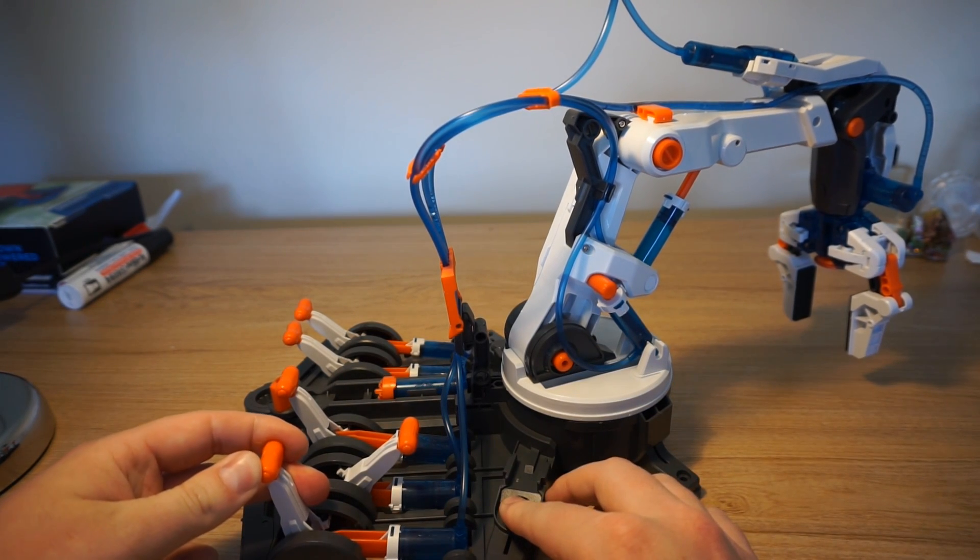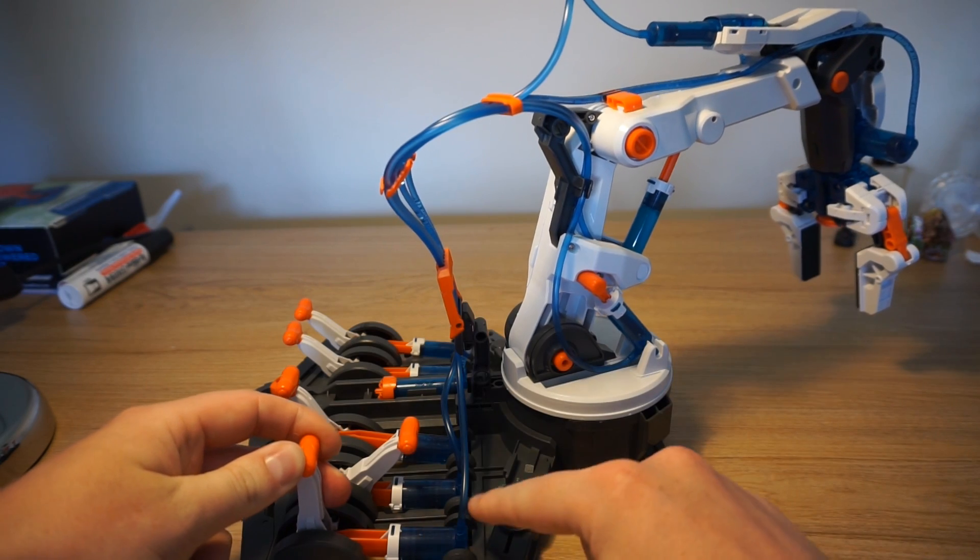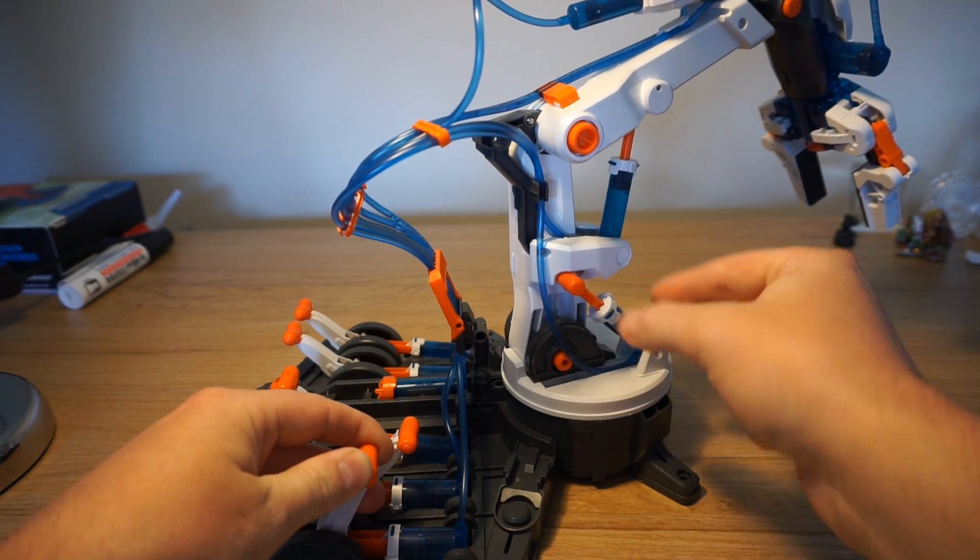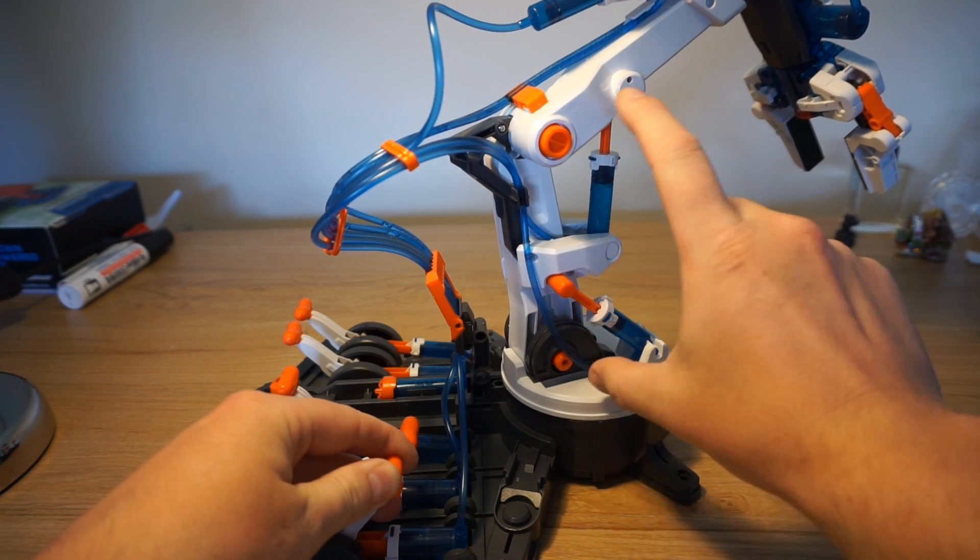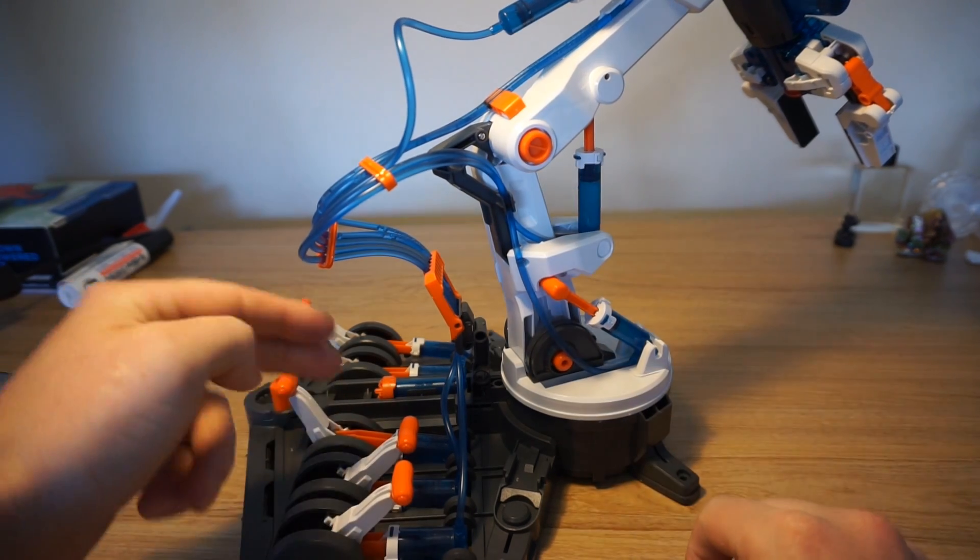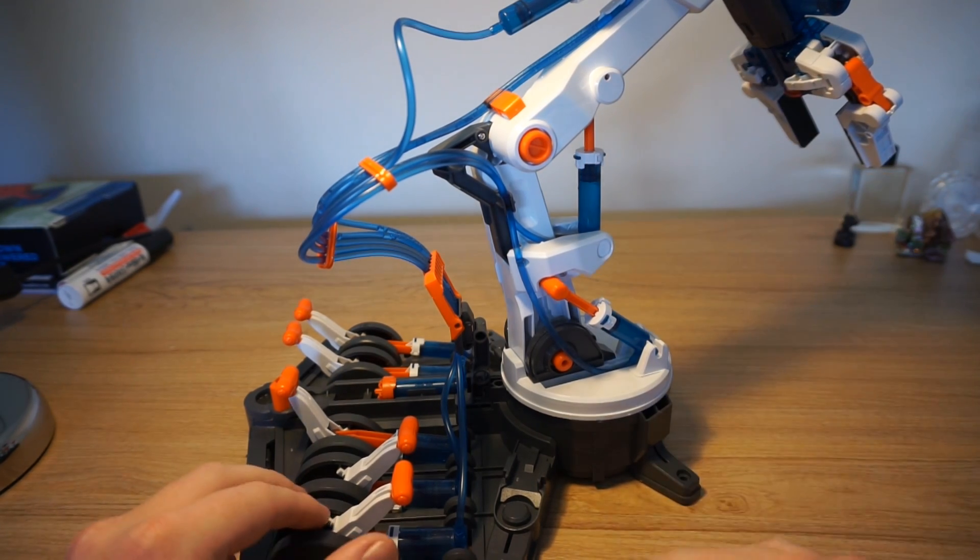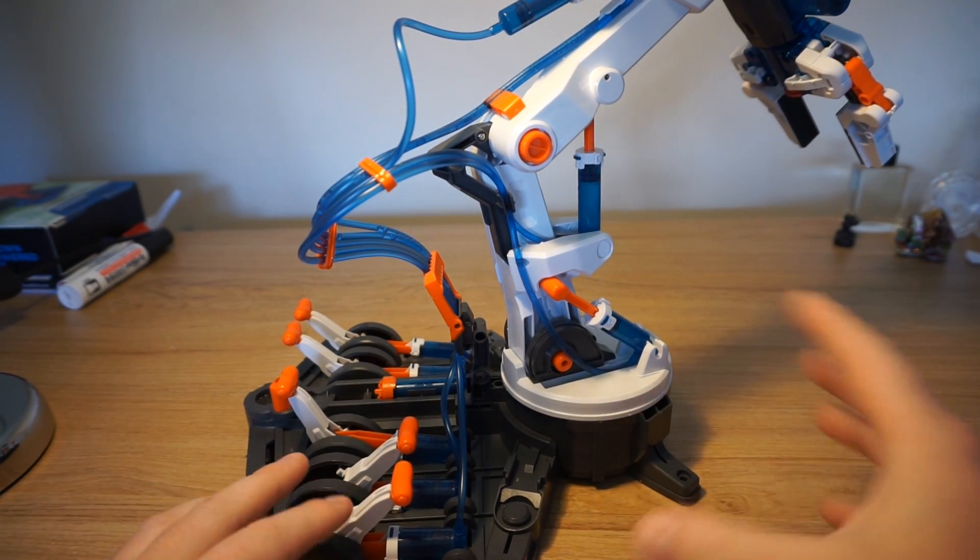And as I push down on this lever it's pushing the water out of this one through this pipe and filling up this piston and as it does it pushes the plunger up and pushes up this whole part of the arm. And there are four other levers that are connected to other pistons that control different parts of the arm and so with some practice you can use it to pick up and move things.